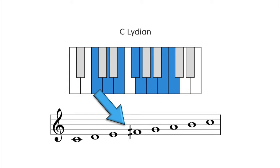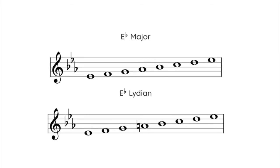You could also think of a C Lydian scale as being a G major scale, but starting on C. Let's look at this Eb major scale and this Eb Lydian scale. Notice again, to form the Lydian scale, you raise the fourth note.